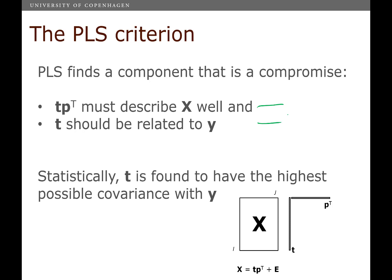but rather it has to describe X well and it has to be related to Y. And how can we achieve that? Well, statistically, what we're doing is that we're trying to find a score vector that has the highest covariance with Y. Having a high covariance will mean that it has a high correlation and that it is describing major things in X.